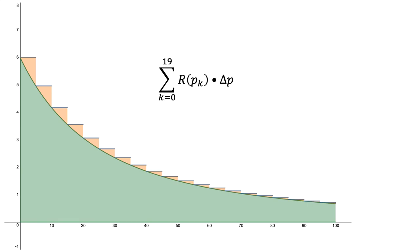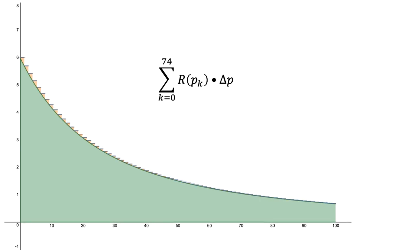Here we have our Riemann sum with 20 intervals. The orange part of the graph shows the amount of error in our approximation that comes from assuming a constant rate of change for each interval. What would happen to this error if we divided the 100 kilometers into 30 intervals? 40? 50? 75? 100? 200? 500? You can see that as the number of intervals gets larger, the amount of error gets smaller, and the value of the Riemann sum approaches the actual amount of accumulated dust.